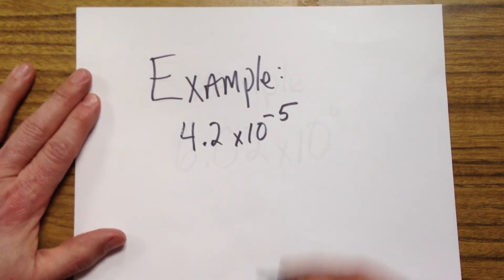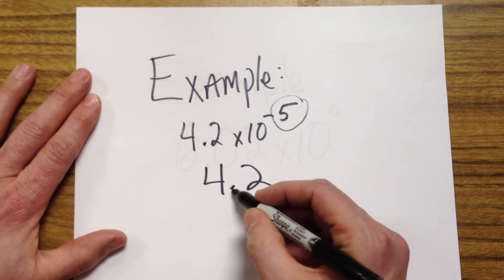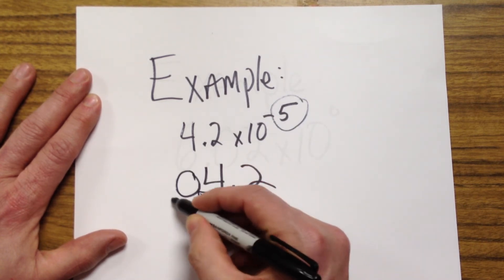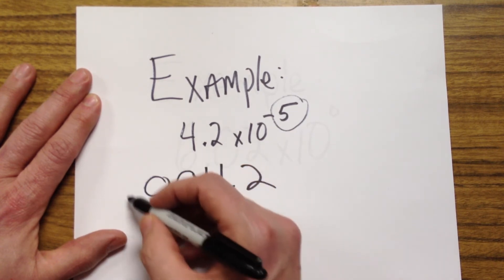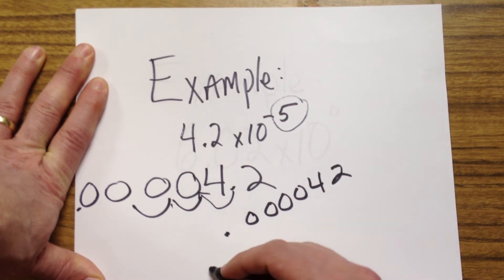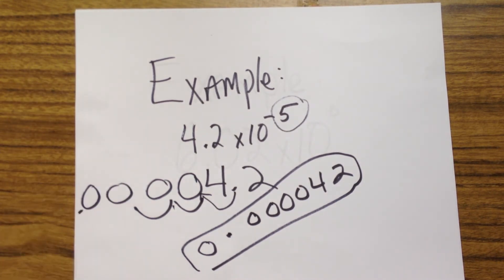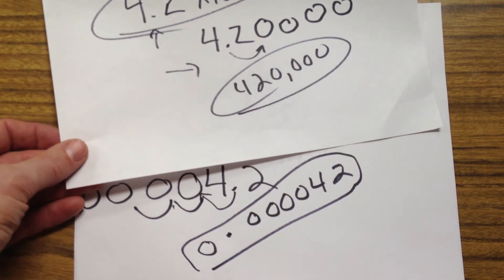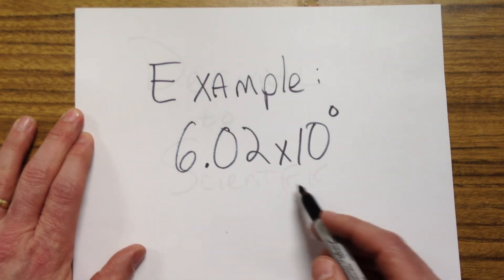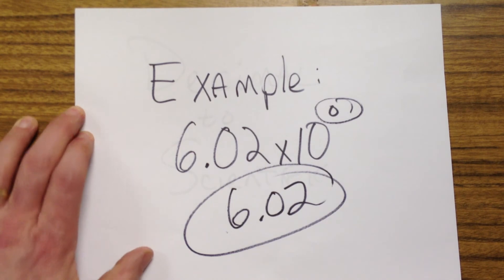Now let's change the sign. We have 4.2 times ten to the negative fifth. We still move five places, but since it's a negative sign we move to the left. When you run out of digits, just add a zero. Moving five places to the left gives us 0.0000042. Notice the incredible difference based on that sign — negative signs make really small numbers, positive signs make really big numbers. And if you have 6.02 times ten to the zero, you move the decimal point zero places, so the number is simply 6.02.